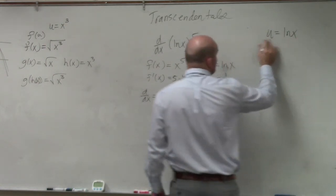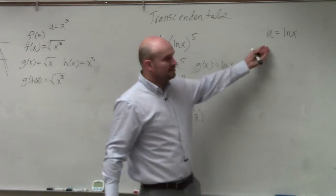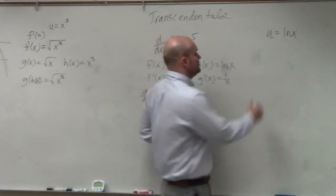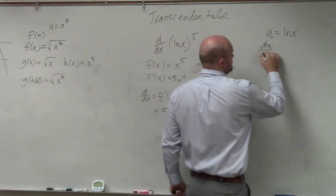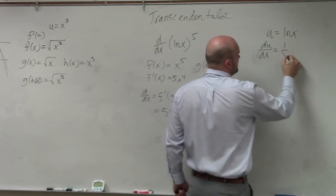And then I can take the derivative of u, but again, implicitly, taking the derivative of u would look like this: du/dx equals 1 over x.